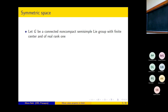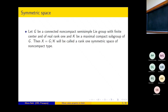This is the definition: let G be a connected, simply connected semisimple Lie group with finite center and of real rank one, and let K be a maximal compact subgroup of G. Then the homogeneous space G/K is called a Riemannian symmetric space of non-compact type.